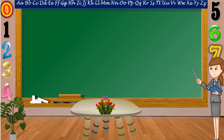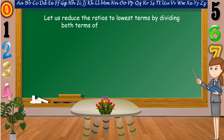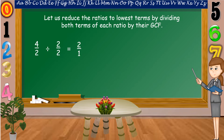To find the answer, let us reduce the ratios to lowest terms by dividing both terms of each ratio by their GCF, or the greatest common factor. Our first ratio is four-halves, and the GCF of four and two is equal to two. So we're going to divide four-halves by two. Four divided by two is equal to two, and two divided by two is equal to one. Two over one in simplest form is equal to two.